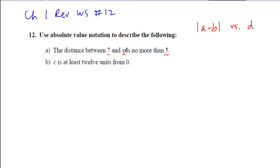I'm going to take the absolute value of my coordinates. Absolute value of x minus 7, compare it to 5, is no more than. So it has to be less than or equal to 5.